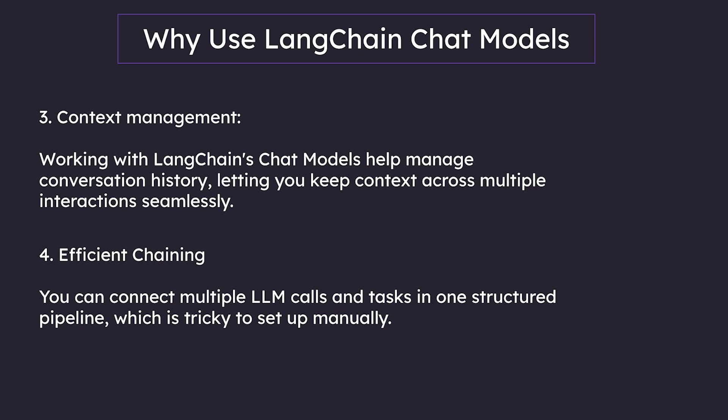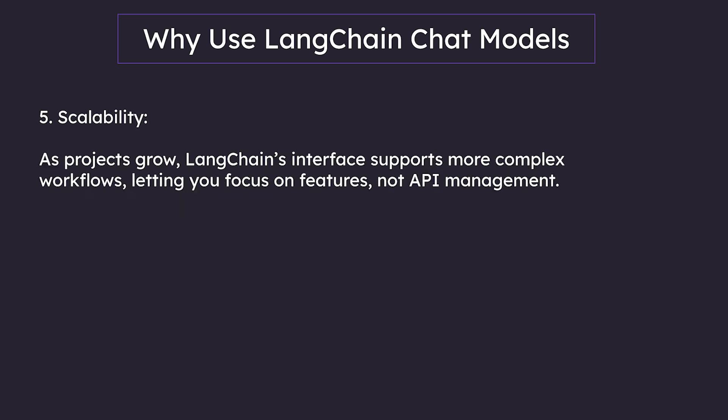Reason number four: efficient chaining. You can connect multiple LLM calls and tasks in one structured pipeline, which can be a bit tricky to set up manually. And finally, reason number five: scalability. As projects grow, LangChain's interface supports more complex workflows, letting you focus on features and not API management.